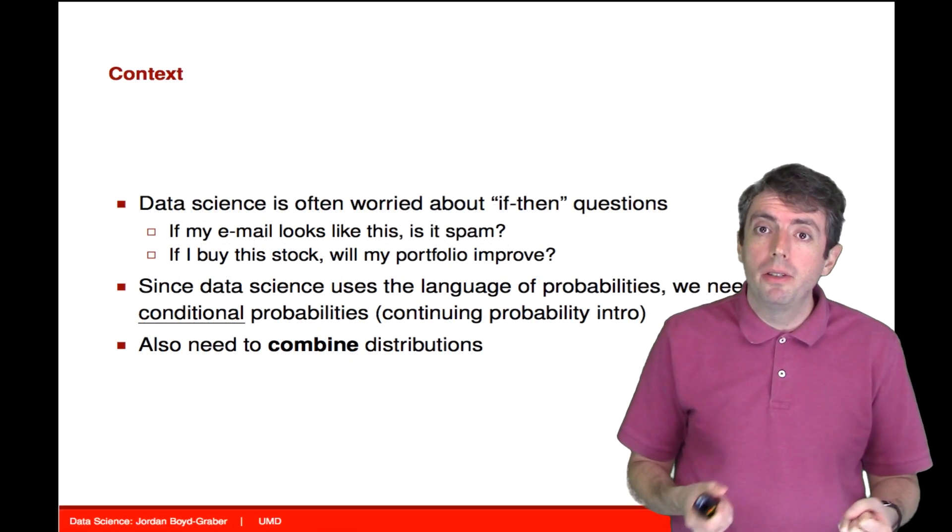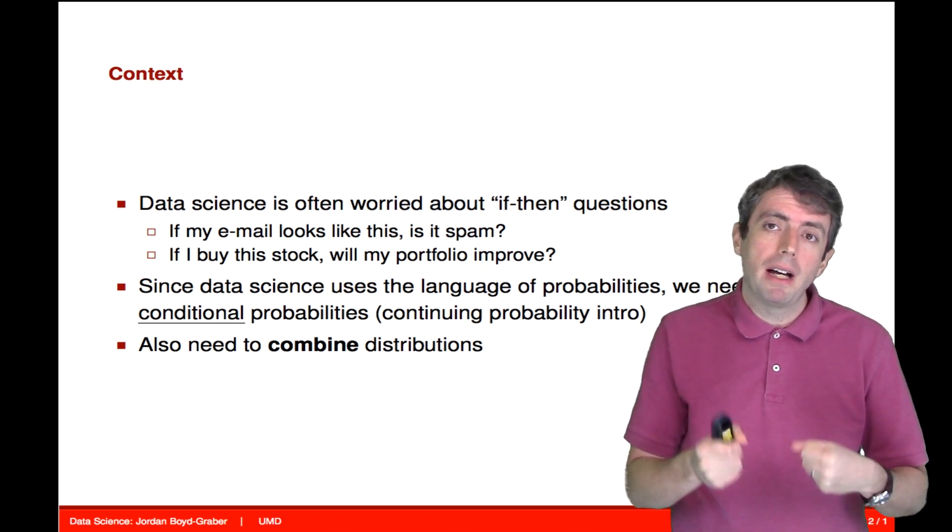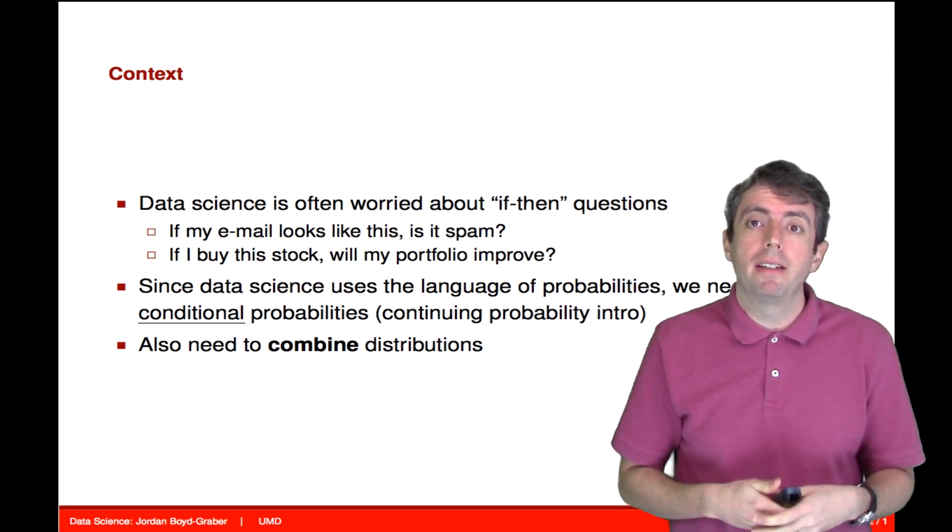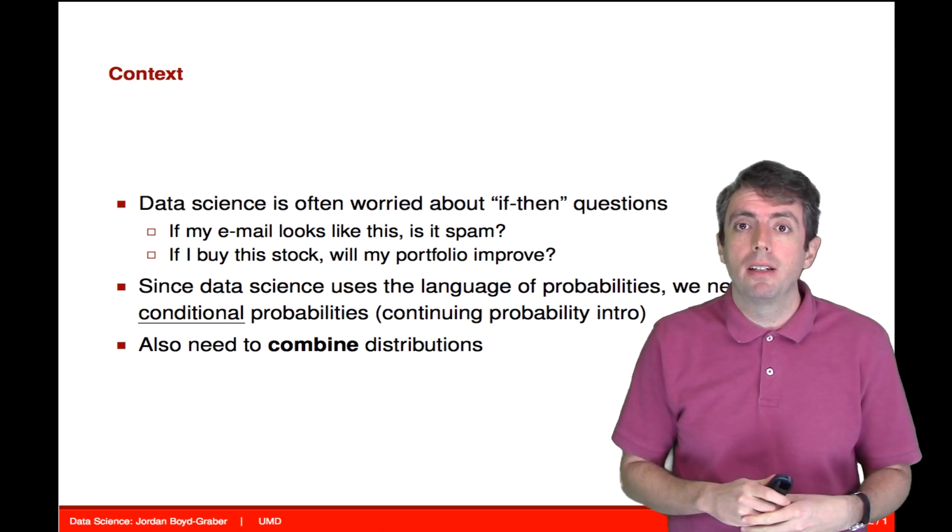What we'll also need to do is to be able to combine distributions. And so this will require us to combine multiple conditional probability distributions together, or to flip the direction of the conditionality.